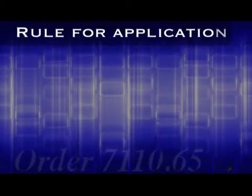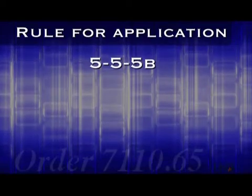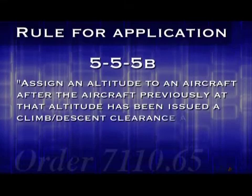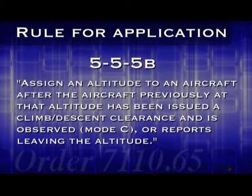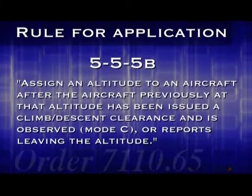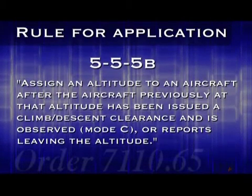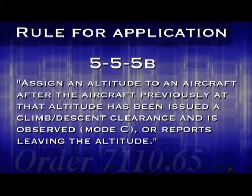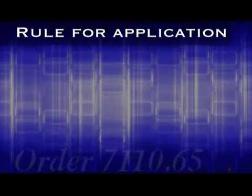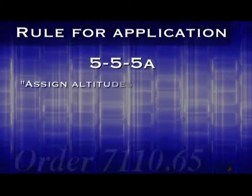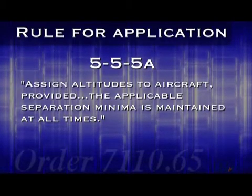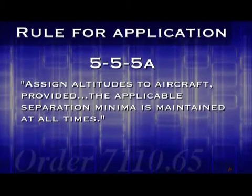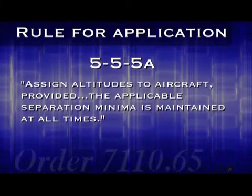Now for the primary rule governing the application of vertical separation. Let's return to Chapter 5, Section 5 and look at Paragraph 5B: assign an altitude to an aircraft after the aircraft previously at that altitude has been issued a climb or descent clearance and is observed with Mode C or reports leaving the altitude. This is more difficult to understand than you might think. It sounds like the 7110 is saying that the only time you can issue an altitude to an aircraft is if no other aircraft in your sector is already at that altitude. But remember what Paragraph 5A said: assign altitudes to aircraft provided the applicable separation minima is maintained at all times. So as long as at least one other type of separation is maintained, such as 3 miles of lateral separation, you can descend or climb aircraft to the same altitude.